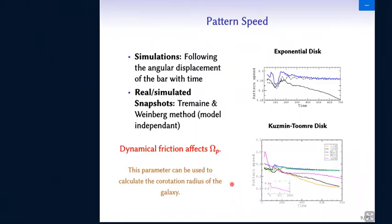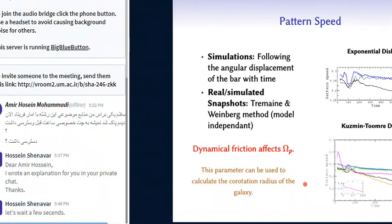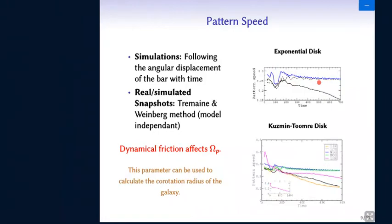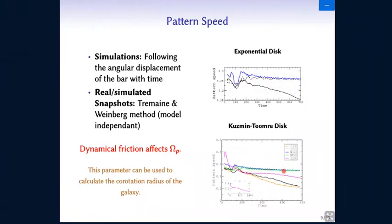The pattern speed of the bar in the disk is another important feature. And we can see similar behavior here again. The oscillations are present in the modified gravity models and also the decline in the pattern speed is visible in the dark matter models.